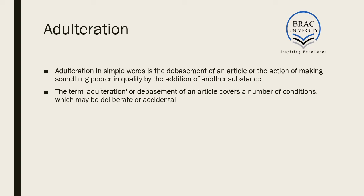So what is adulteration? In simple words, adulteration is the debasement of an article, or the act of making something inferior in quality by the addition of another substance. The term adulteration or debasement covers a number of conditions which may be deliberate or accidental — so it can be both deliberate or indeliberate.